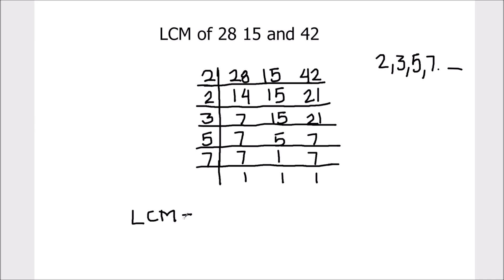To find the LCM, we are going to take the product of all the factors which are on the left-hand side of the ladder. So 2 times 2 times 3 times 5 times 7 is the LCM.